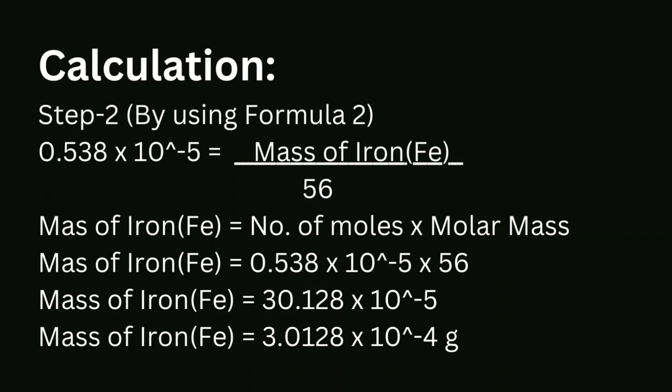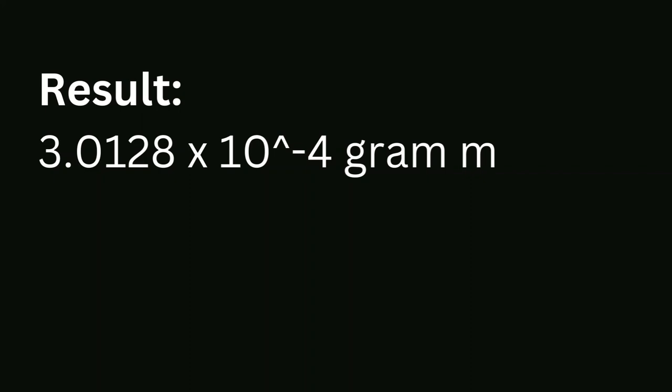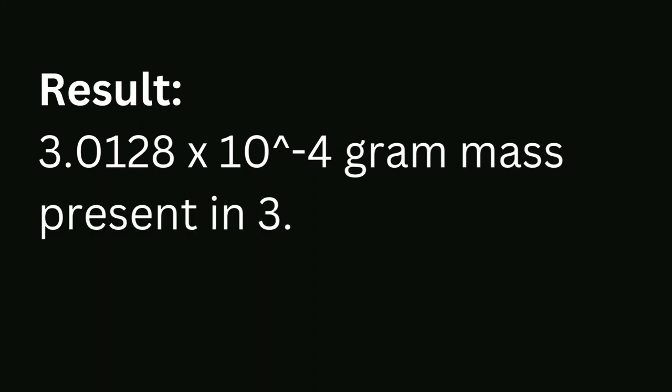Result: mass of iron = 3.0128 × 10⁻⁴ grams present in 3.24 × 10¹⁸ atoms of iron.